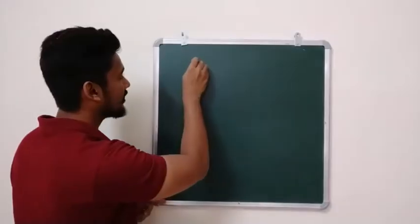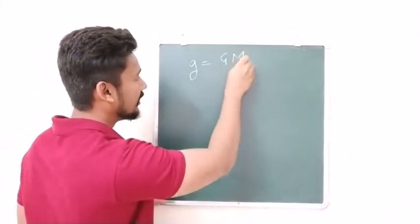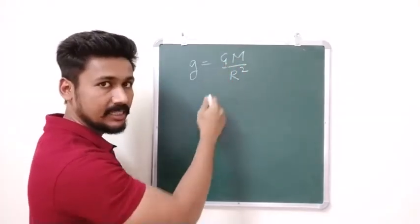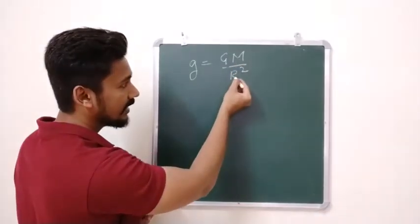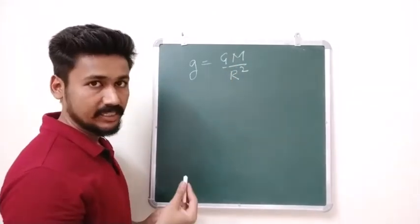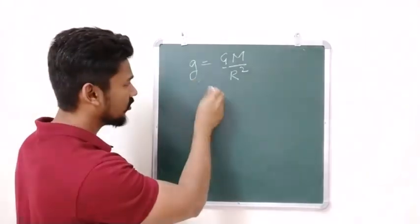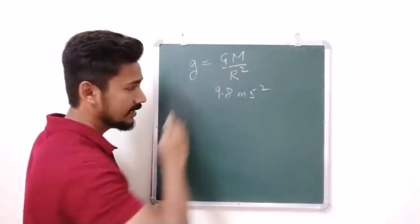We also got the formula for acceleration due to gravity, that is small g is equal to capital G m upon r square, where this capital G is the universal constant of gravitation, m is mass of the earth and capital R is the radius of the earth, and we found that on our earth